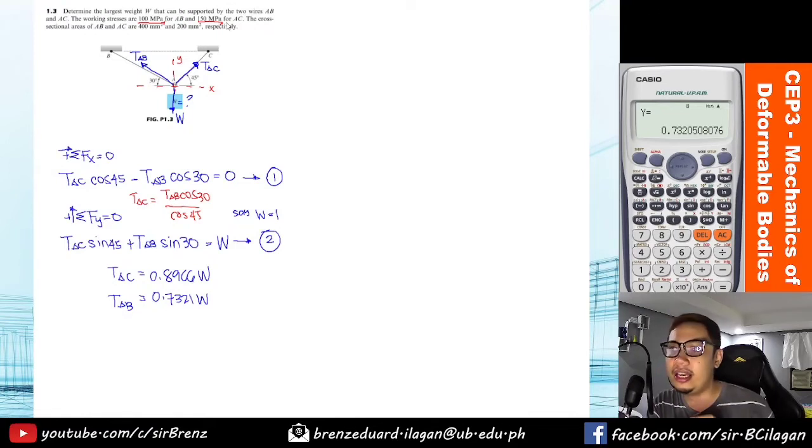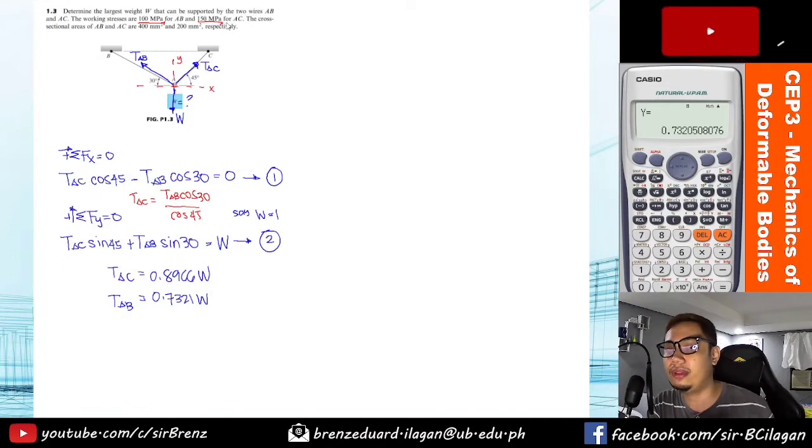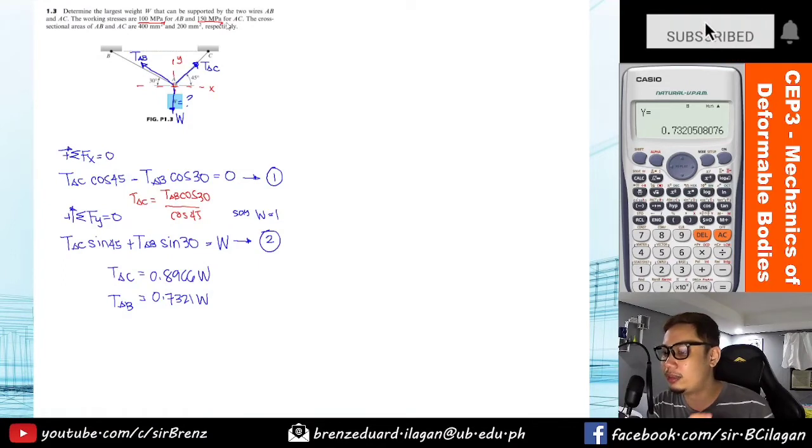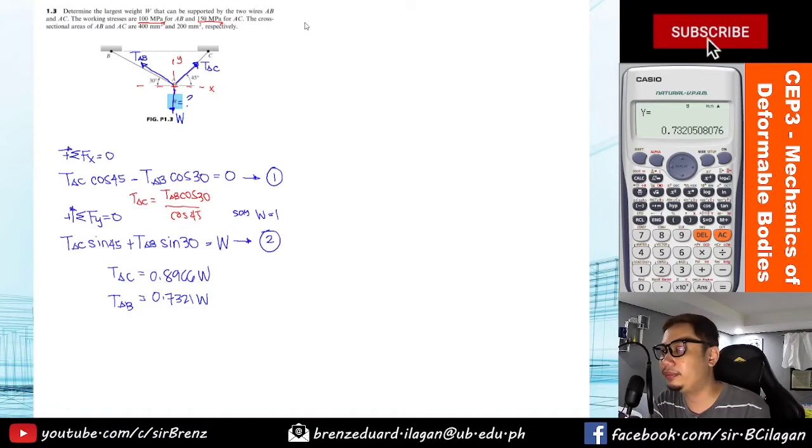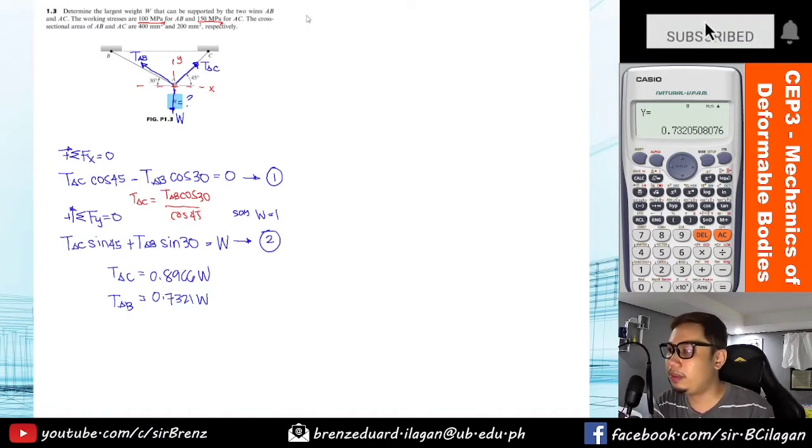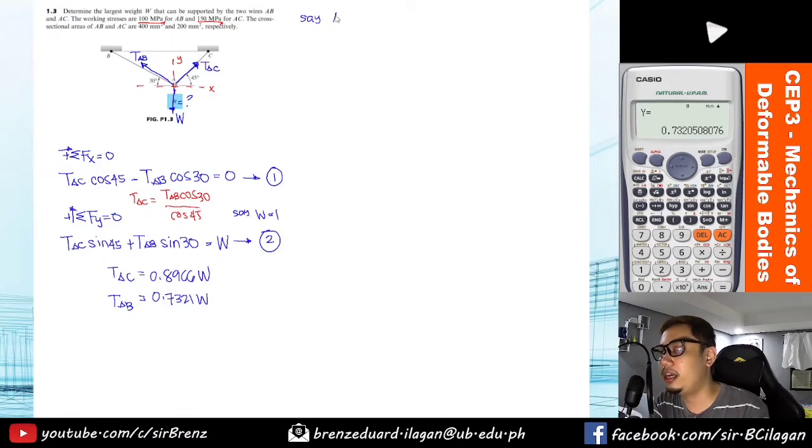So again, they won't reach the working stress simultaneously. The statement just says AB can carry stress of 100 MPa and AC can carry 150 MPa. So what we'll do guys, since we have the value of AC and AB in terms of W, we'll check which of these two will reach their stress limit first. Let's just say we'll choose—there's no problem here because from the answer we'll know if we got it right.